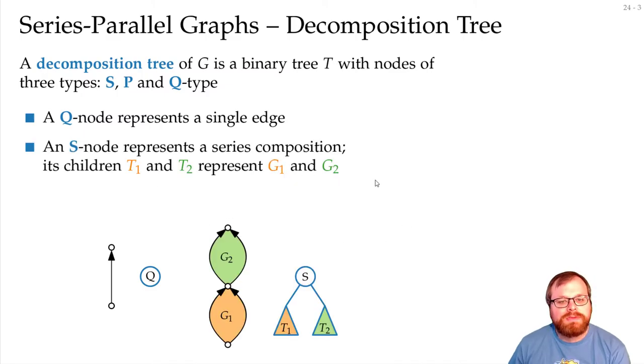An S node represents a series composition. It has two children, T1 and T2, and the left child represents the graph G1, that's here at the bottom, and the right child represents graph G2, which is here at the top.